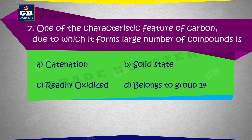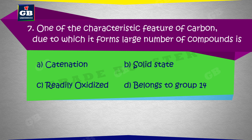One of the characteristic features of carbon due to which it forms a large number of compounds — carbon ki ek vishishta visheshata jiske karan yah badi sankhya mein compounds banata hai: a) Catenation, b) Solid state, c) Readily oxidized, d) Belongs to group 14.